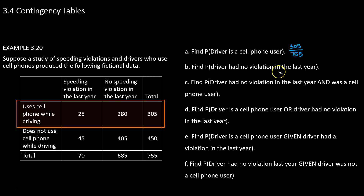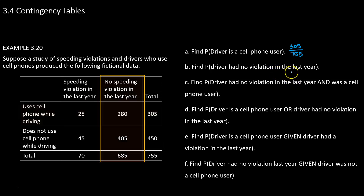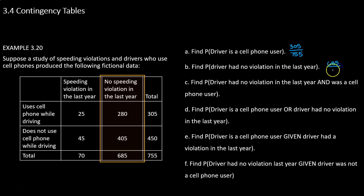If I wanted to find the probability that a driver had no violation in the last year, I look at the column for drivers with no violation. In that column there's a total of 685 members out of the 755 in the study.